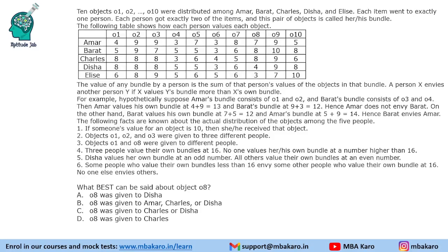Hello everyone, welcome to Aptitude Jab. This set from CAT 2021 Slot 2 DILR says that there are 10 objects O1, O2 and so on up till O10, distributed among 5 people A, B, C, D, E. Each item went to exactly 1 person and each person got exactly 2 of the items. This pair of objects is called his or her bundle, so each person will get 2 objects that will be called their bundle.